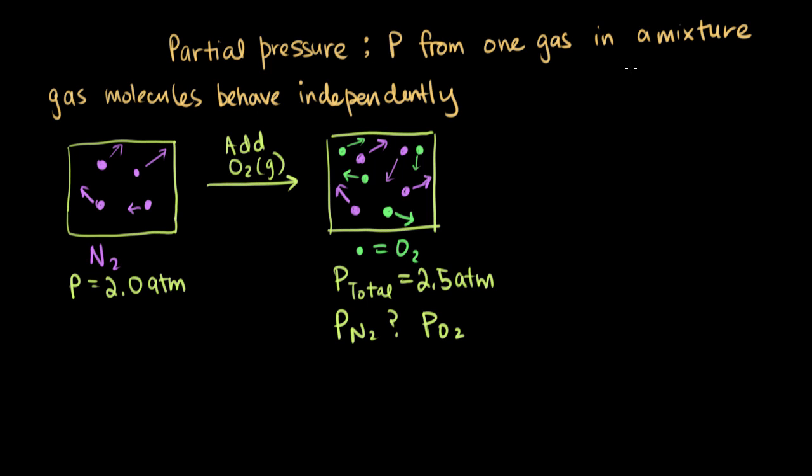And we said earlier that the gas molecules behave independently. And because they behave independently, we can actually just add up the partial pressures in a mixture to get the total pressure. So one equation that you'll see for partial pressure is that the total pressure is just equal to the sum of all of the partial pressures of the gases in your mixture, plus dot dot dot.